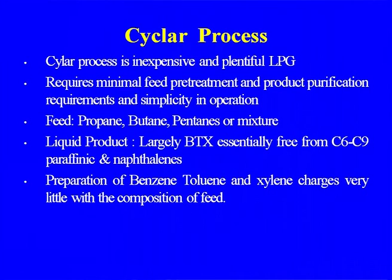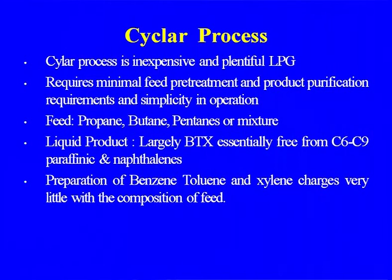The Cyclar process uses inexpensive and plentiful LPG. Many refineries with surplus naphtha were considering LPG-mode cracking. LPG is also available from various refinery processes and separated from natural gas before being supplied to fertilizer plants. This LPG can be used for aromatization. The Cyclar process requires minimal feed treatment and product purification, and simpler operation compared to other conventional processes.